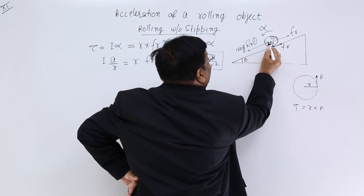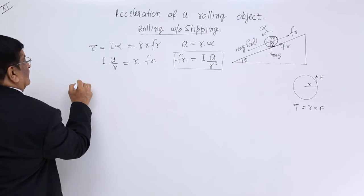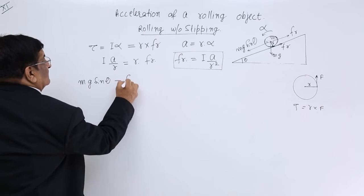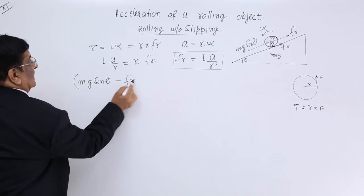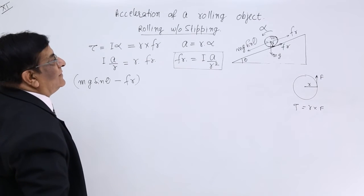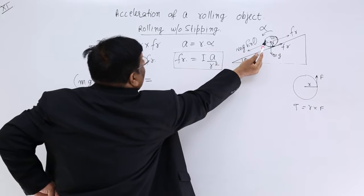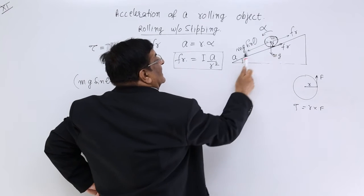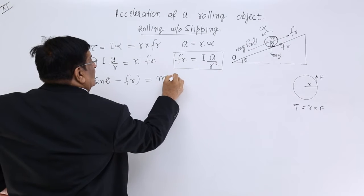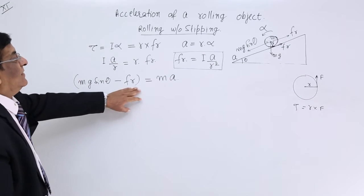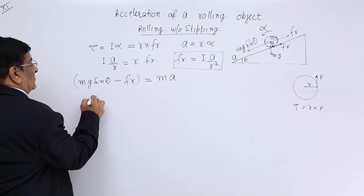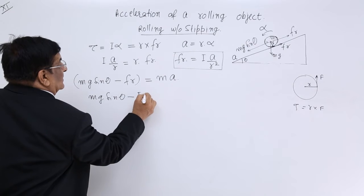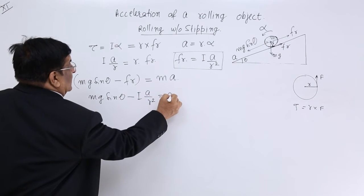Now for the free body diagram: the downward force is Mg sin theta and the upward force is friction. The net force is Mg sin theta minus friction. Since the body of mass M comes down with acceleration A, net force equals M into A. Substituting, Mg sin theta minus I into A upon R squared equals M into A.